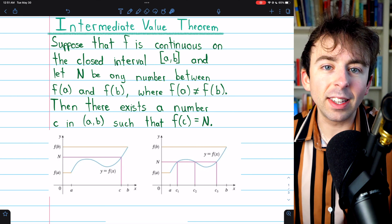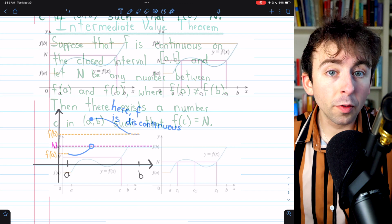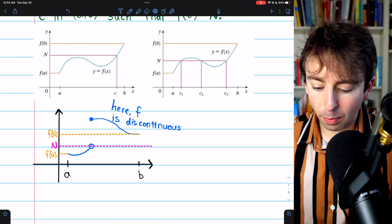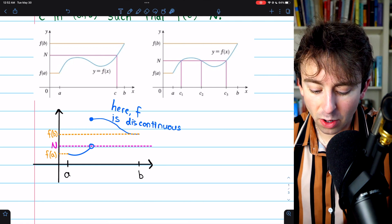But again, the IVT just guarantees that it would happen once, at least once. Of course, like we talked about with our teleporting frog, this theorem does not apply to discontinuous functions.